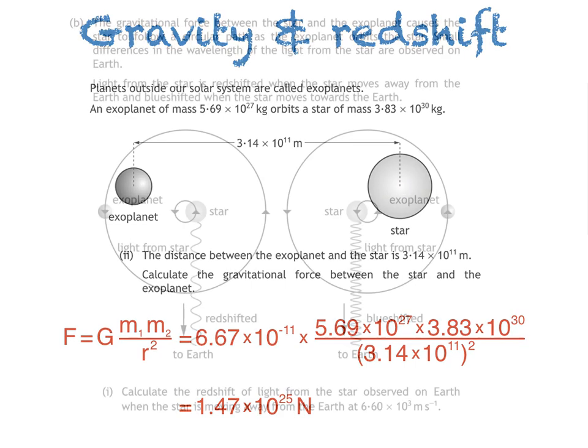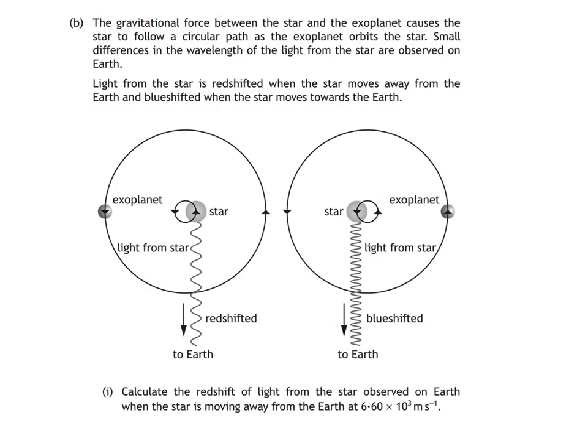Here's B part 1. The gravitational force between the star and the exoplanet causes the star to follow a circular path as the exoplanet orbits the star. Small differences in the wavelength of the light from the star are observed on Earth. Light from the star is red-shifted when the star moves away from the Earth and blue-shifted when the star moves towards the Earth. We're then asked to calculate the red-shift of light from the star observed on Earth when the star is moving away from the Earth at 6.60 times 10 to the power of 3 metres per second.